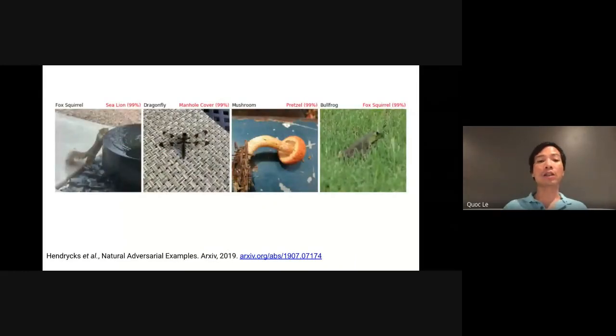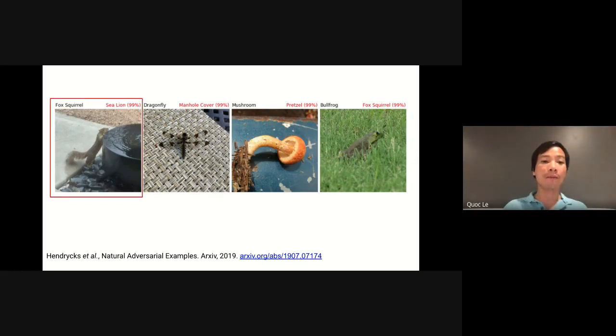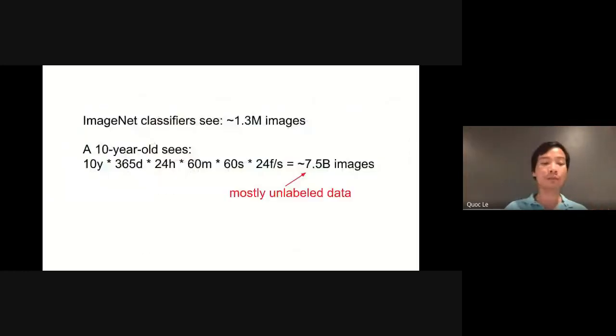Another observation is that ImageNet classifiers can easily misclassify test images that are harder or out of distribution. For example, shown here are several images from the ImageNet-A test set. Even though the objects can be easily recognized by humans, a ResNet classifier can be easily fooled. The image on the left is recognized as sea lion by a ResNet model, even though the correct category is fox squirrel.